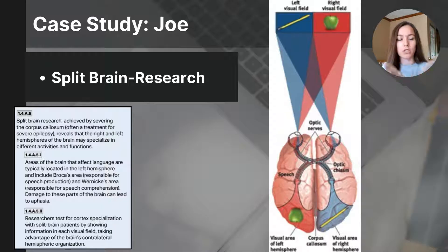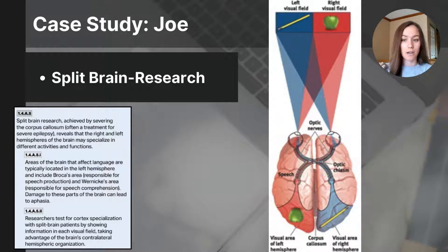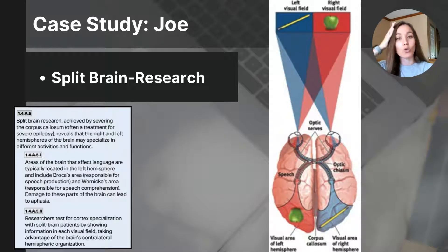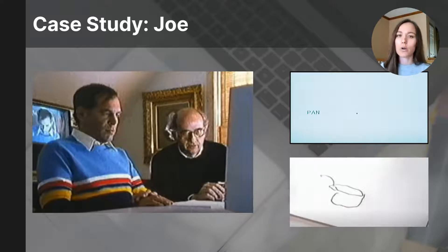Let me also remind you of information from previous videos. You already know that our brain uses contralateral control — the left hemisphere coordinates movements of the right side of the body, and the right hemisphere controls movements of the left side. You also know that Broca's area and Wernicke's area reside only on the left hemisphere, meaning the parts of our brain that control speech and language are only housed on the left side. Now let's see what happens to Joe, who has had his corpus callosum severed.